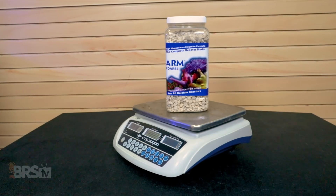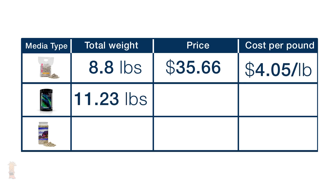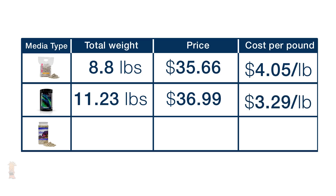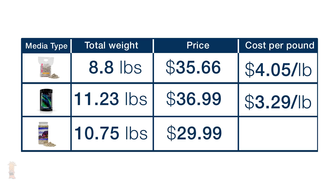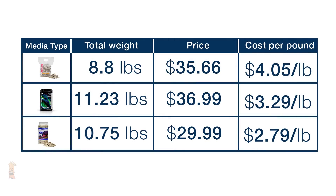Just for fun, and to get an idea of the cost differences between these calcium reactor media options, I weighed each one and looked at their current price to get an idea of the cost per pound. The Two Little Fishies Reborn weighed in at exactly 8.8 pounds as listed on the packaging, and at its current price of $35.66, works out to be $4.05 per pound. The Brightwell Coral Lazarus bag weighed in at 11.23 pounds with a $36.99 price tag, for a total of $3.29 per pound, while the jug of CaribSea ARM coarse media weighed in at 10.75 pounds and at $29.99 makes it the most economical choice at $2.79 per pound. Strictly speaking from a cost standpoint, the best could very well be the CaribSea ARM media as you get more for what you pay for.